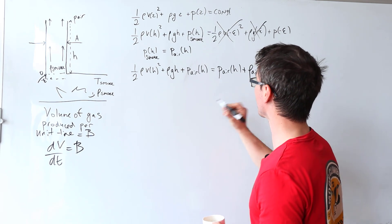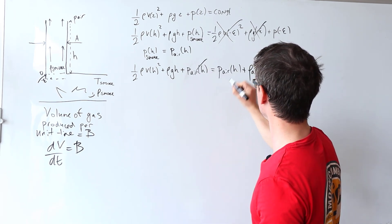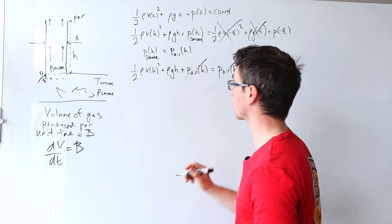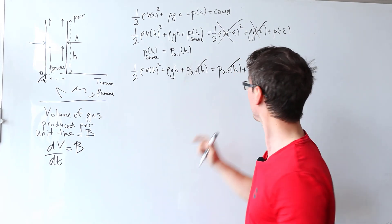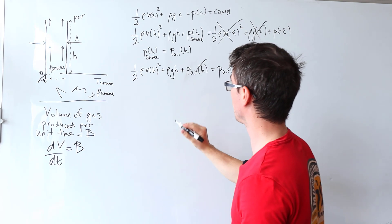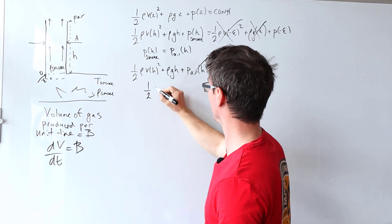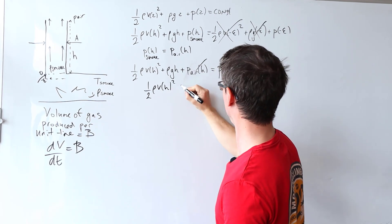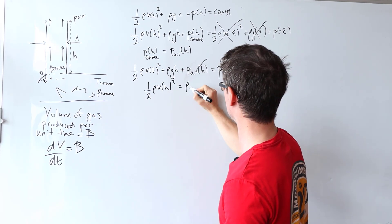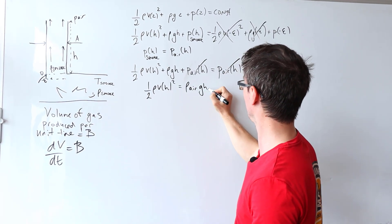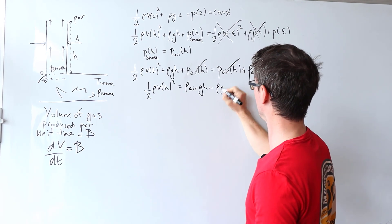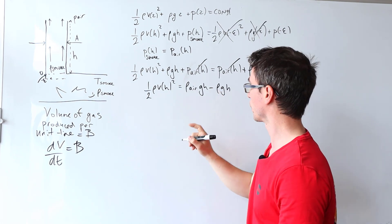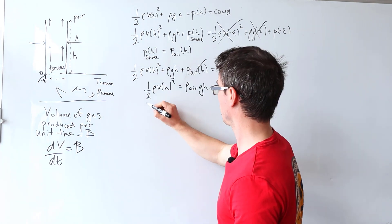Okay, and now we can just cancel some stuff out, so p of air can go, and we can start rearranging this equation while we're drinking coffee for the speed. So I'm going to go a half rho V h squared is equal to rho air g h take away rho g h. This rho here by the way stands for the density of the smoke.